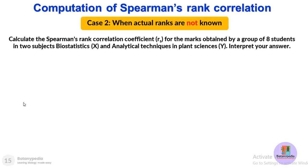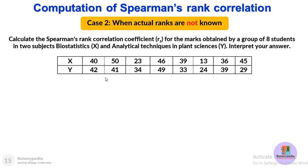Case 2: rs is calculated when ranks are not known. Calculate the Spearman's rank correlation coefficient for marks obtained by eight students in two subjects — biostatistics (X) and analytical techniques in plant sciences (Y). Note that none of the values are repeated in either subject, so there is no tie in this case.